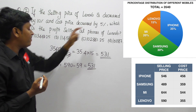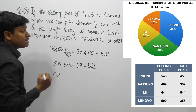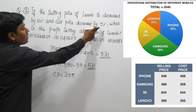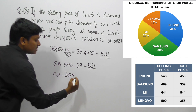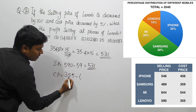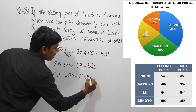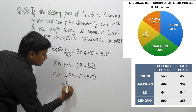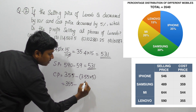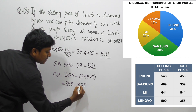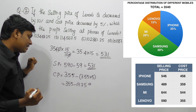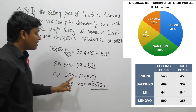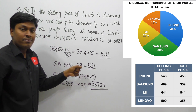Next, the cost price is decreased by 5%. The cost price of Lenovo is 355. 1% of 355 is 3.55, so 5% is 3.55 × 5 = 17.75. Since it is a decrease, we subtract: 355 − 17.75 = 337.25. So the new cost price of Lenovo is 337.25.